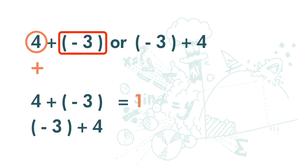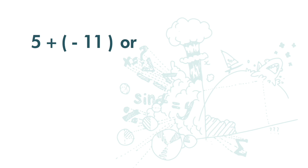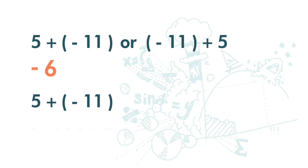Let's do one more: 5 plus negative 11, or negative 11 plus 5 — they are the same. The number with the greater value is 11, and 11 carries a negative sign, so the answer has to be negative. We use the greater value minus the lesser value: 11 minus 5 equals 6. So the answer is negative 6. Whether it is 5 plus negative 11 or negative 11 plus 5, the answer is negative 6.